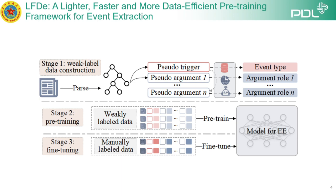Unlike previous methods, the proposed framework quickly gets familiar with the task format using a small amount of automatically created weak label data. It's a three-step process: creating weak label data, pre-training, and fine-tuning.